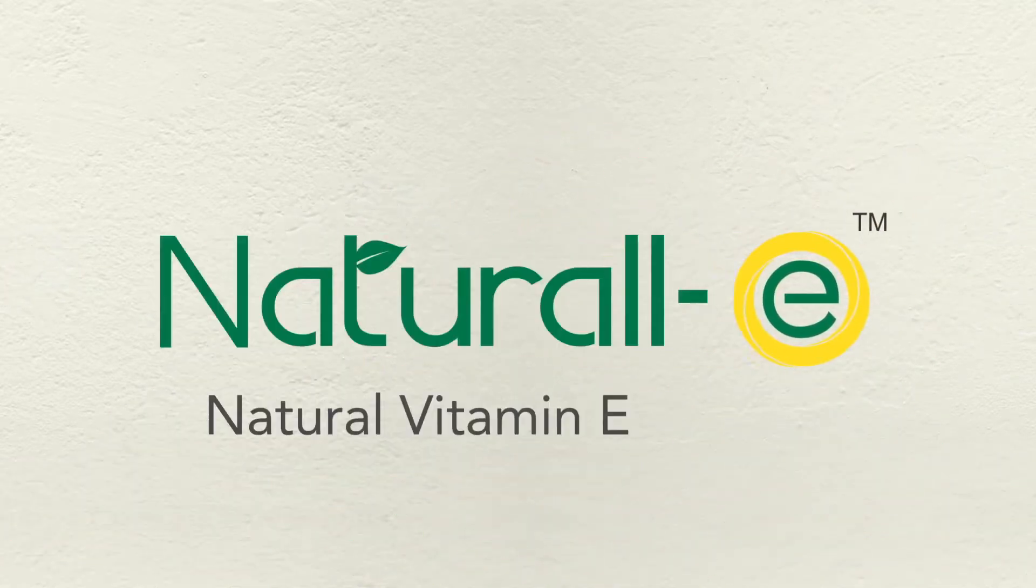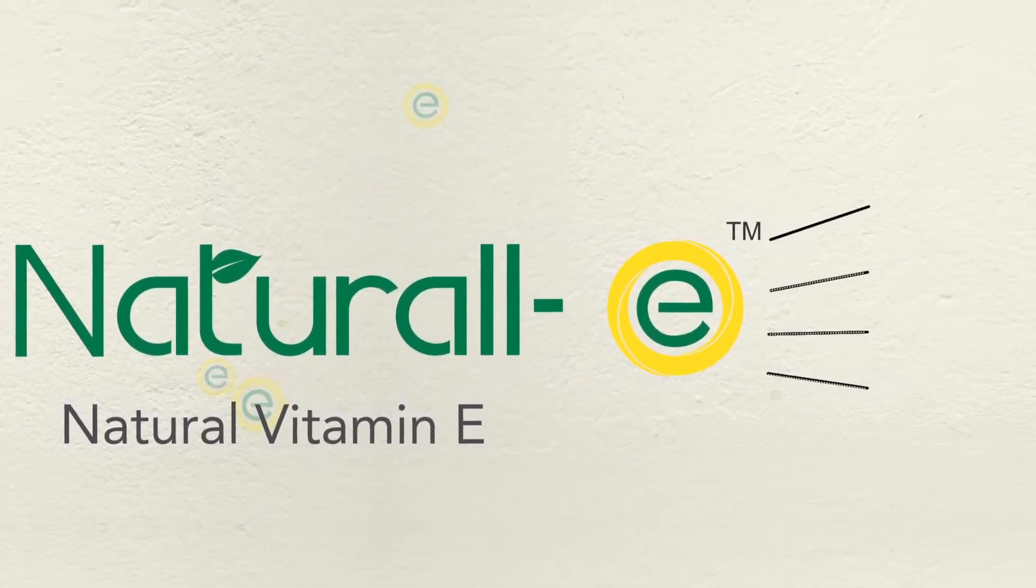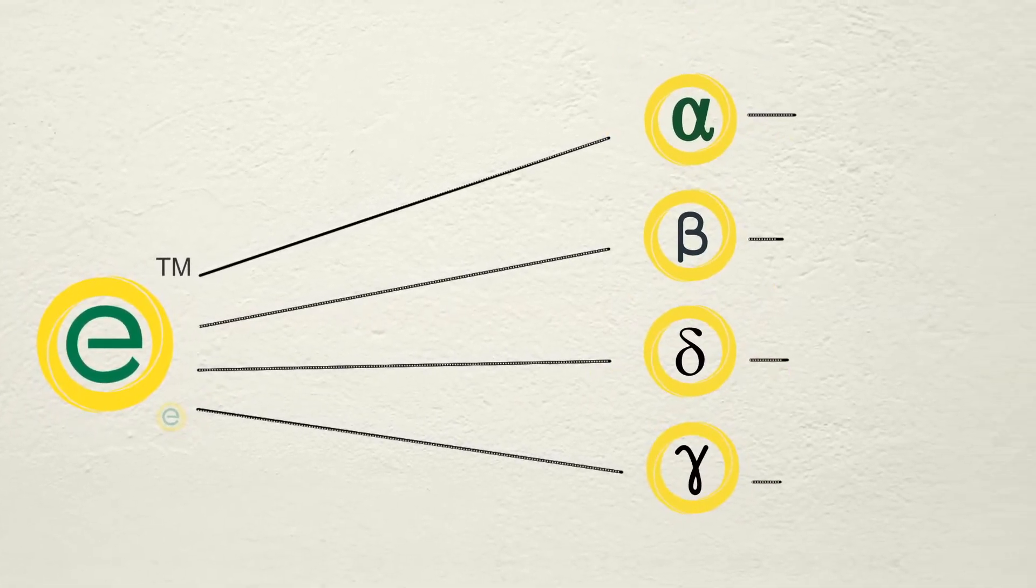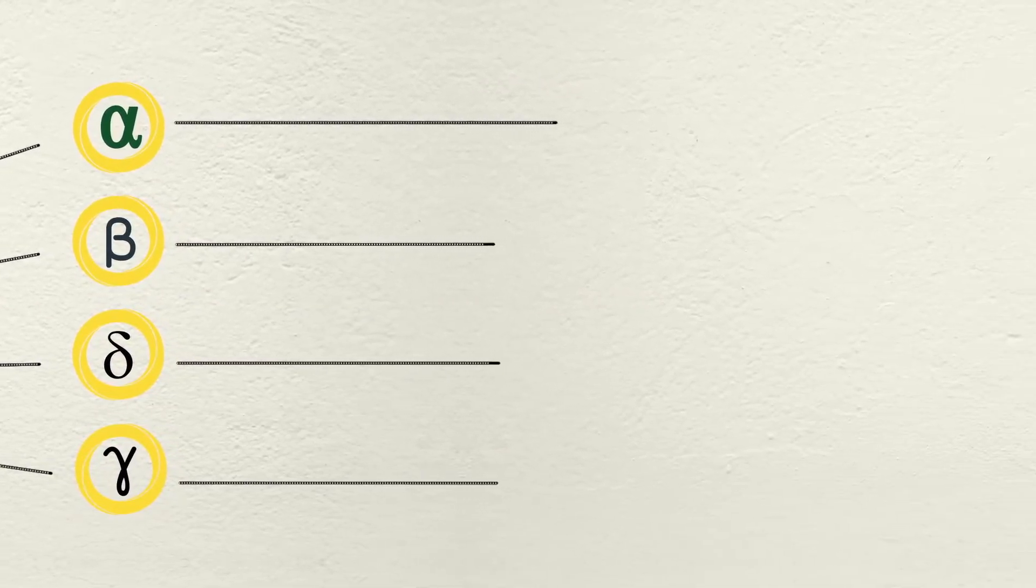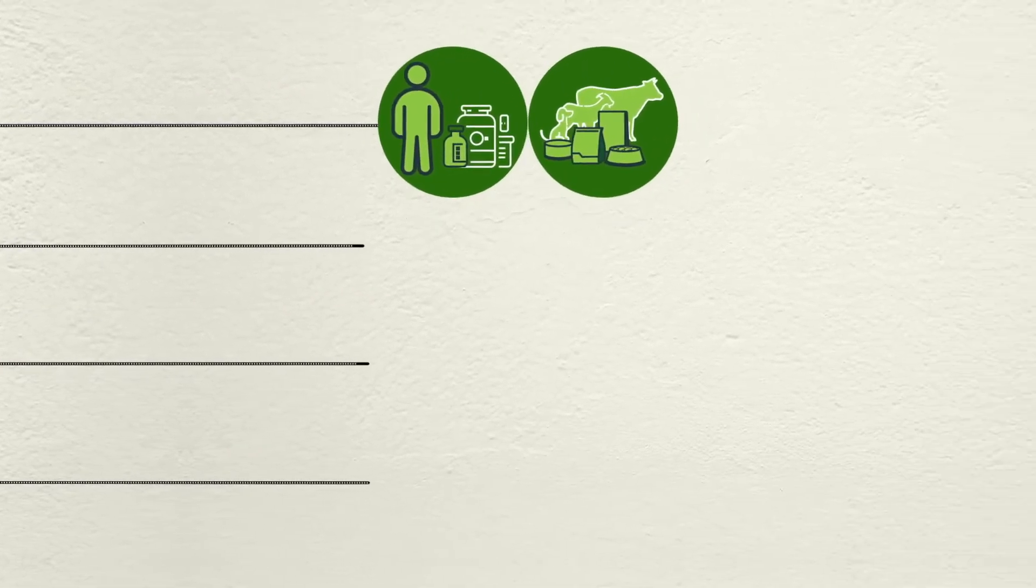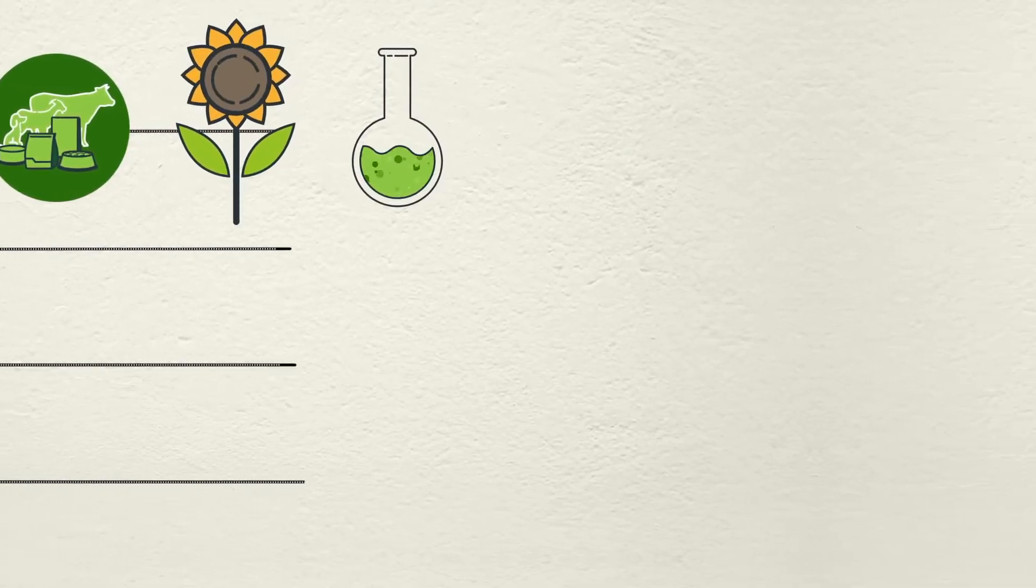Natural E is our range of natural tocopherols. Natural E is composed of four isomers. The alpha isomer is a known source of vitamin E, useful in human and animal nutrition applications. These are derived from sunflower and rapeseed oil distillates.